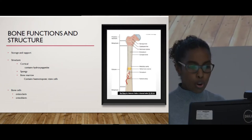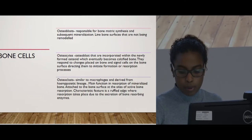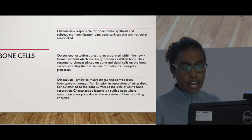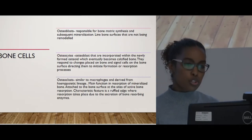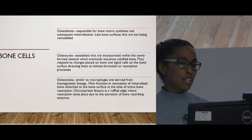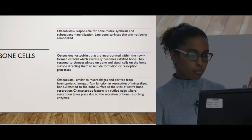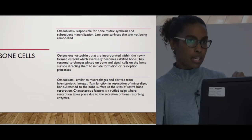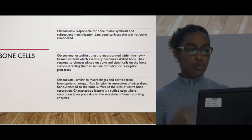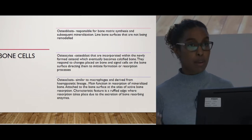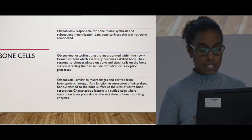The bone cells work synergistically to both remodel and resolve bone. The osteoblasts are mainly responsible for bone matrix synthesis and subsequent mineralization, whereas the osteocytes are osteoblasts that are incorporated within a formed osteoid that eventually becomes calcified bone. Osteoclasts are very similar to macrophages — they resolve bone and are also derived from the hemopoietic lineage.